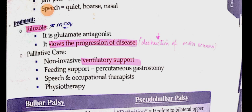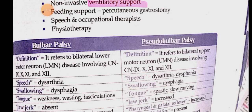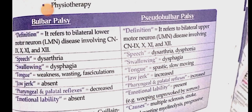The treatment for motor neuron disease — which also appears in MCQs — is riluzole, which is a glutamate antagonist. It reduces the progression of the disease and reduces destruction of motor neurons. In addition, we give ventilatory support and feeding support, and do speech therapy, occupational therapy, and physiotherapy.